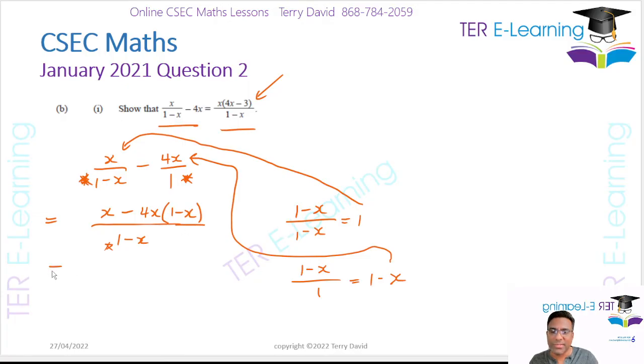The next thing I need to do is to simplify that top part there. So I have x minus, so we need to remove the brackets here. Minus 4x by 1 is going to give you minus 4x. Minus 4x by minus x is going to give me plus 4x².